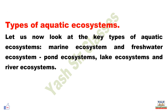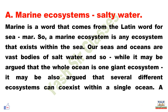Let us now look at the key types of aquatic ecosystem: marine ecosystem, freshwater ecosystem, pond ecosystem, lake ecosystem, and river ecosystem. A marine ecosystem exists within the sea. The word marine comes from the Latin word for sea, 'mare.' Seas and oceans are vast bodies of salt water.